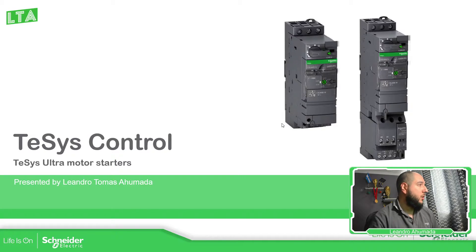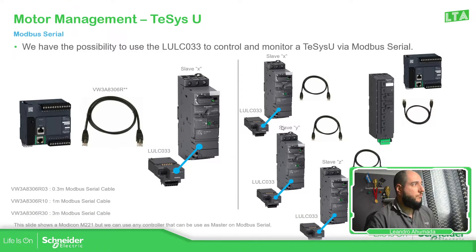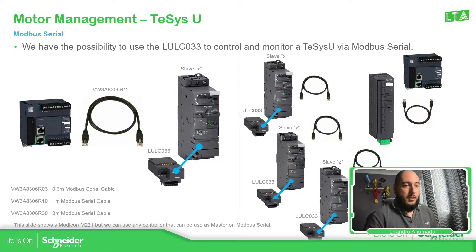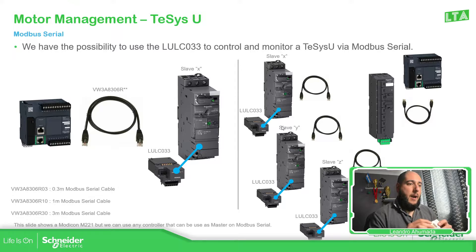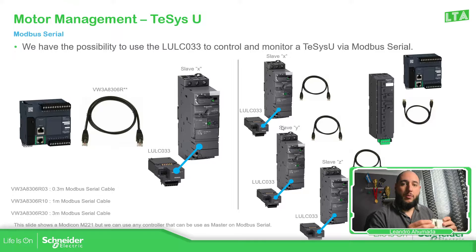So what we need is to have an advanced base that will allow us to have the communication card. This communication card that I have here is white — the new one is in black. So as soon as you put this on the TESIS-U, we have some terminals over here that, depending on the product selection you have made, you can use or remove and have the other one directly connected to the unit.